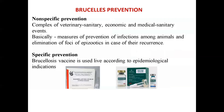Brucellosis prevention: non-specific prevention involves a complex of veterinary, sanitary, economic, and medical-sanitary measures, primarily focused on prevention of infection among animals and elimination of epizootics foci. For specific prevention, a live Brucellosis vaccine is used according to epidemiological indications.